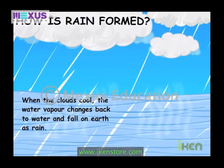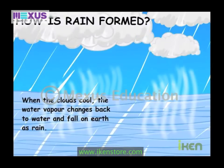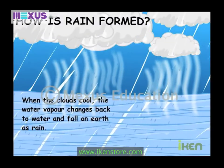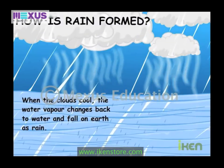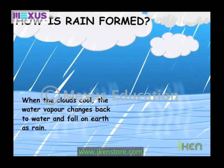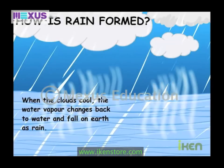When the clouds cool, the water vapour changes back to water and falls on the earth as rain.